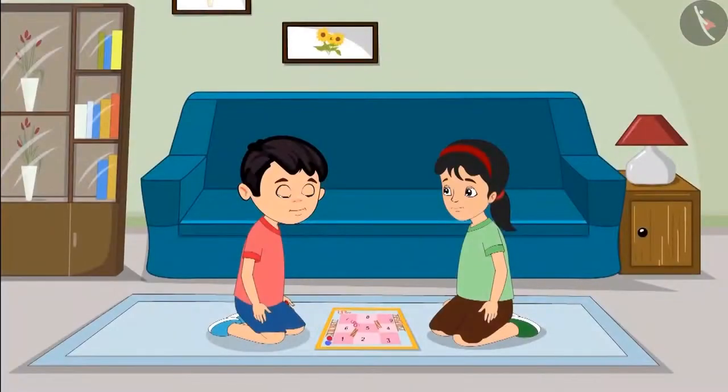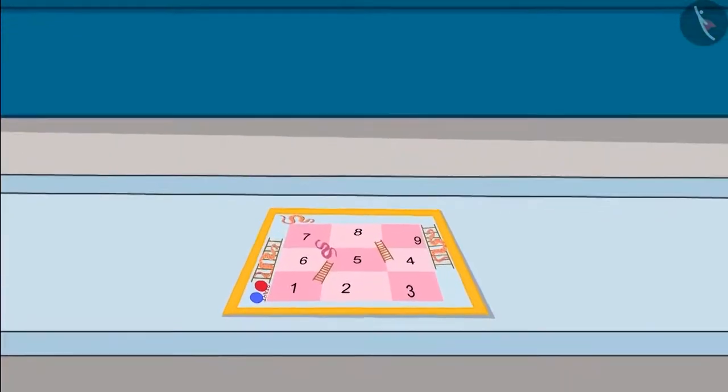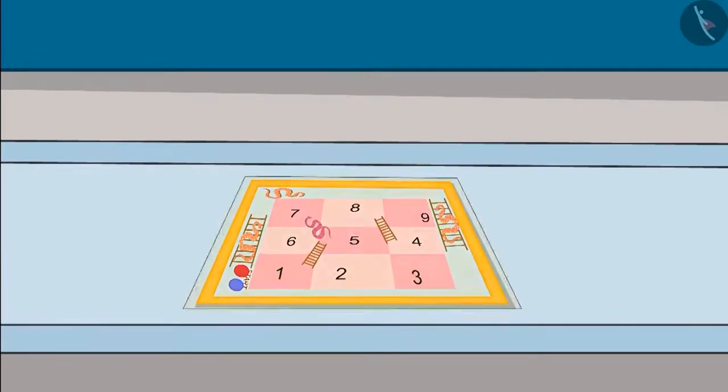Pinky and Chotu are playing the small snakes and ladder game because it has numbers only from 1 to 9. In this, two dice are thrown in turns and by adding numbers of both dice, one has to move the piece to the correct number. The one who reaches at 9 first wins the game. Let us see how Chotu and Pinky are enjoying this game.